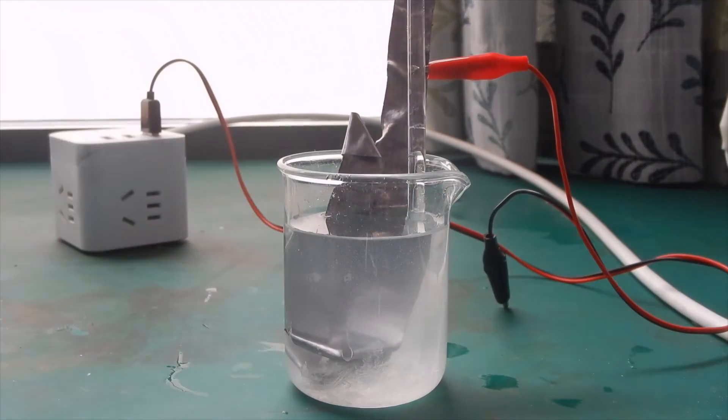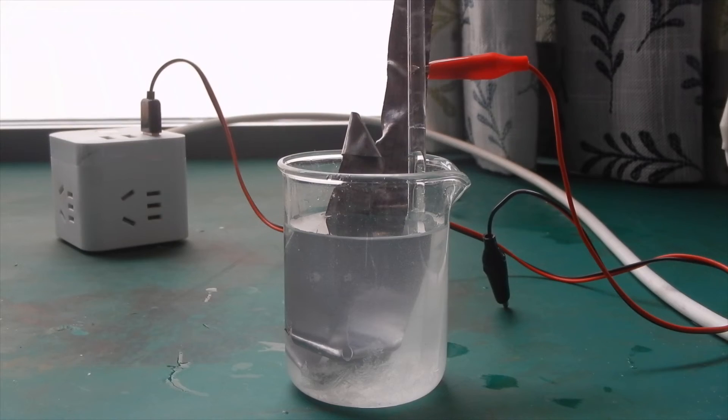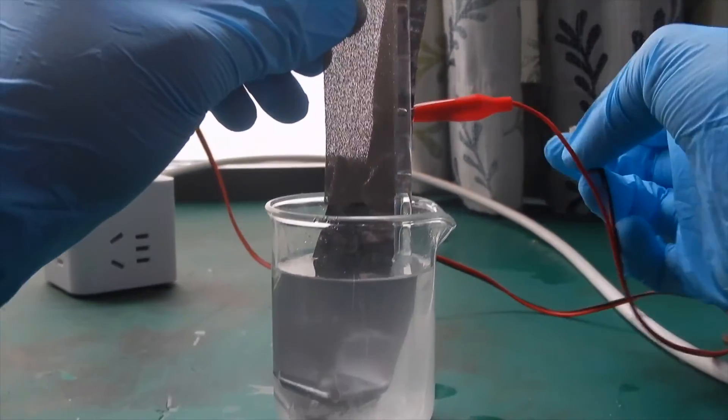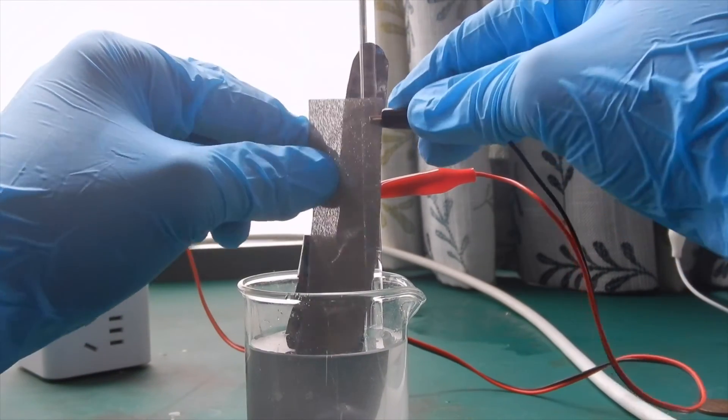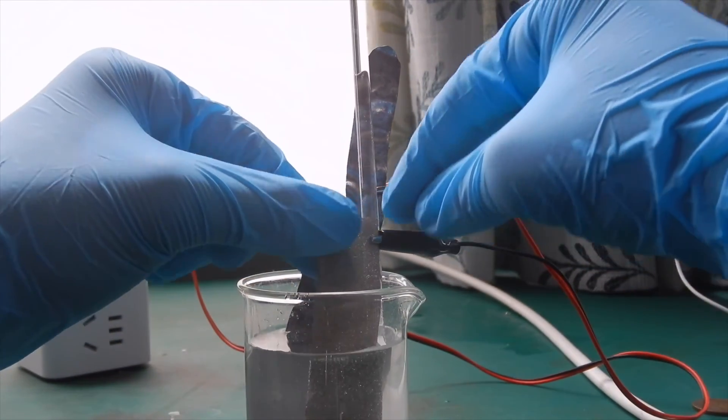We put the lead into the solution and connect it to the anode. We then place in a piece of foam nickel, which is basically nickel plated on sponge, as the cathode. Electrolysis is then performed for several hours.